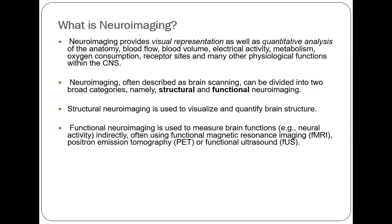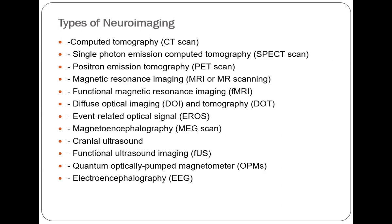Neuroimaging, often described as brain scanning, can be divided into two broad categories: structural and functional neuroimaging. Structural neuroimaging is used to visualize and quantify brain structure, and functional neuroimaging is used to measure brain functions — for example, neural activity — indirectly, often using fMRI, PET scan, or functional ultrasound.